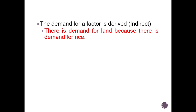The demand for a factor is derived or indirect. For example, there will be demand for land because there is a demand for rice. If there is demand for rice, you need someone to supply the rice, meaning that person has to demand for land in order to produce rice for final consumers.